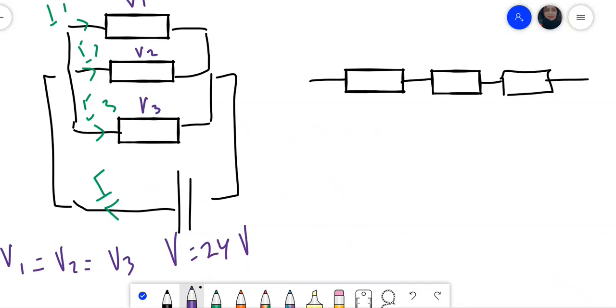So potential difference will remain the same. On the other hand, if I connect them in series, the voltage will be divided. So the total voltage, voltage of the battery, will be divided to V1 plus V2 plus V3. So total voltage will be V1 plus V2 plus V3, etcetera, if you have more lamps. So voltage across each lamp will be less than the total voltage that comes out of the battery. That means the brightness of the lamp will be less.